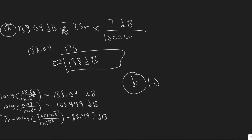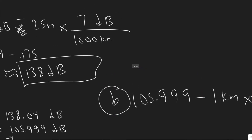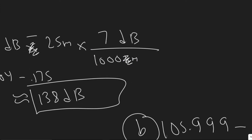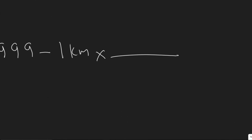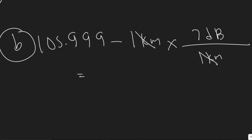For part B, we take 106 dB and subtract the absorption. The distance is 1 kilometer, so that's 1,000 meters divided by 1,000, times 7 decibels — we're subtracting 7 decibels. So 106 minus 7 gives us about 99 decibels. That's the answer to B.